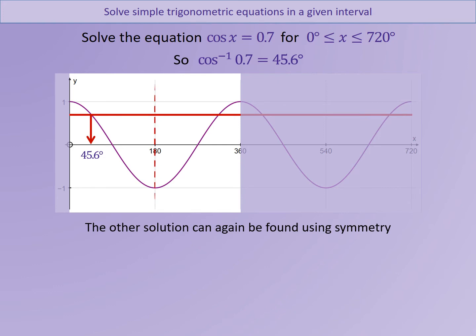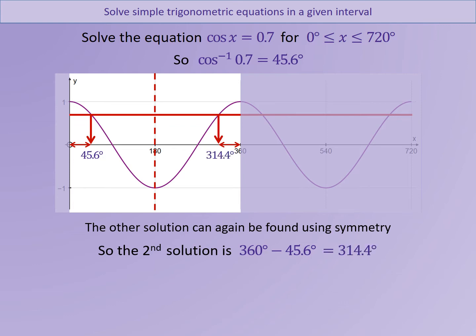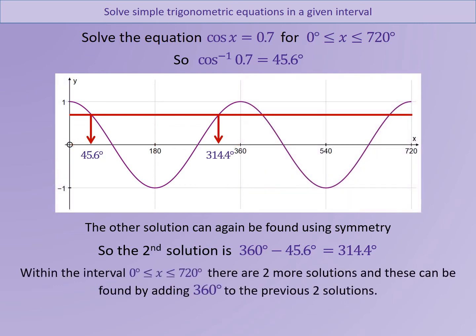Using the symmetry of the cosine curve between 0 and 360, the second value is found by doing 360 minus 45.6, so the rule is slightly different to the sine curve. That gives an answer of 314.4 degrees. So now we have two solutions, but there are a couple more to write down.